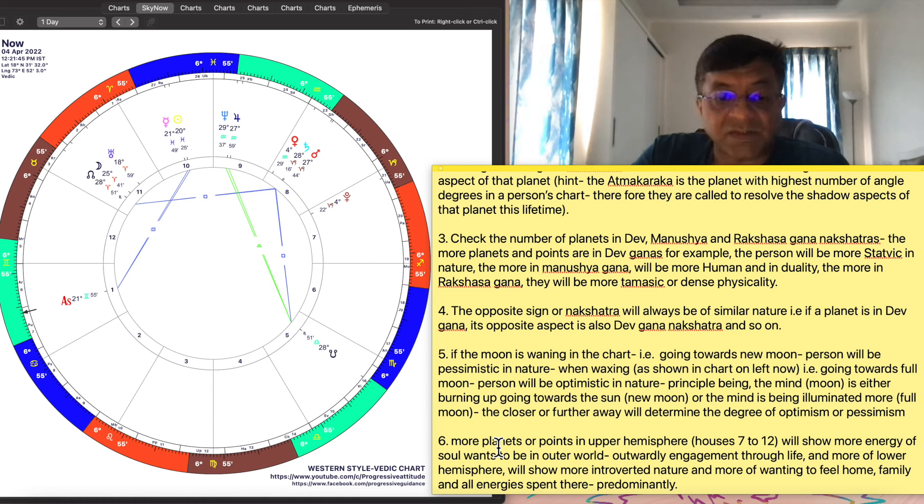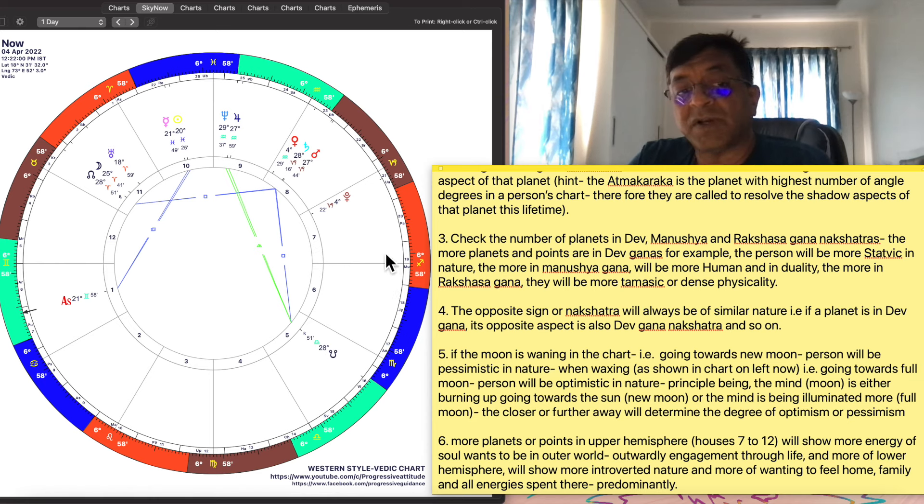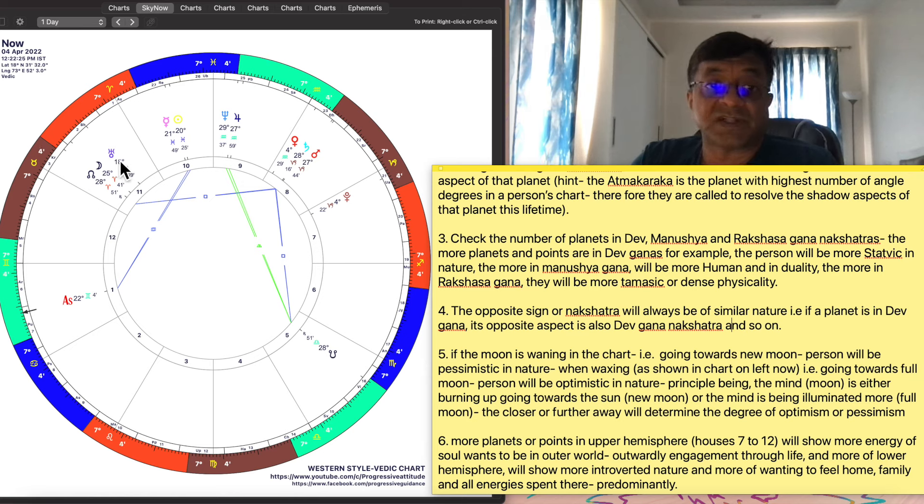The more the sixth aspect and the last one we will cover for now. The more planets or points in the upper hemispheres - I think I covered this in a brief video before - houses number 7 to 12. This is houses number 7, 8, 9 through 12. Will show more of the energy soul wants to be in the outer world. Everything here is about the outer world. As you can see any person born in India now here with this chart has a lot of energy and lot of karma and lot of work and energy spent in the outer world because most of the planets and points including some of the major outer ones like Uranus, Neptune, Pluto everything is in the upper half. So they will be coming here or they have come here or being born to predominantly play out energies and work, hobbies, relationships, everything in the outer world.